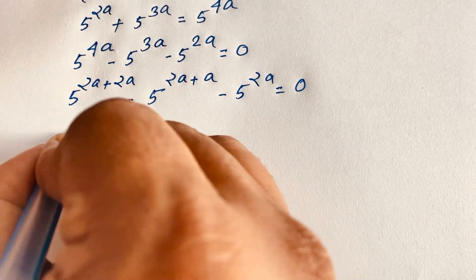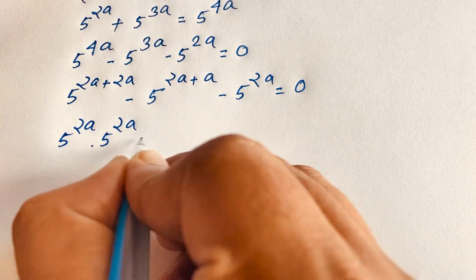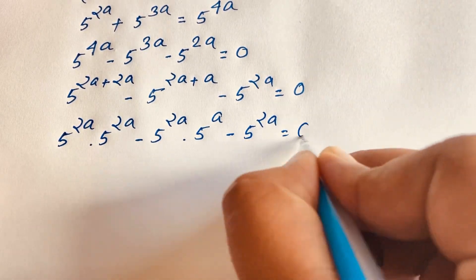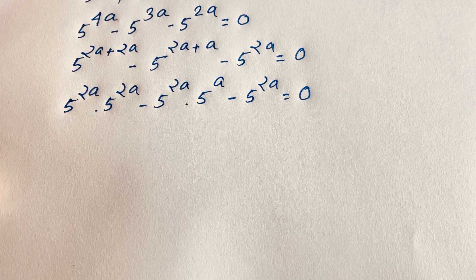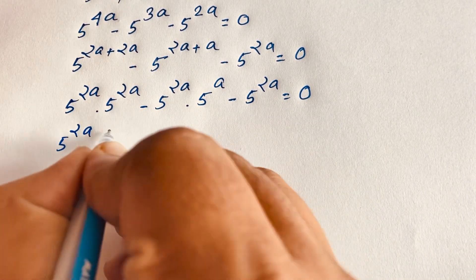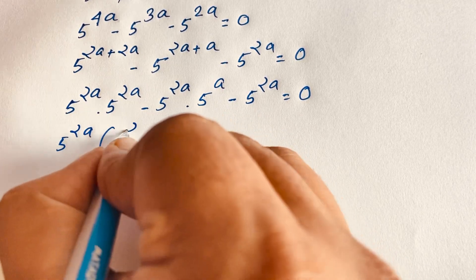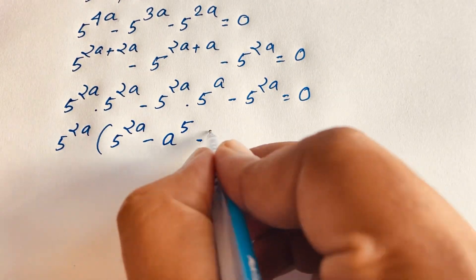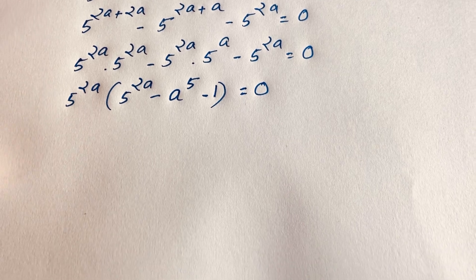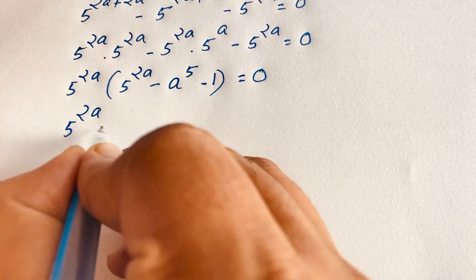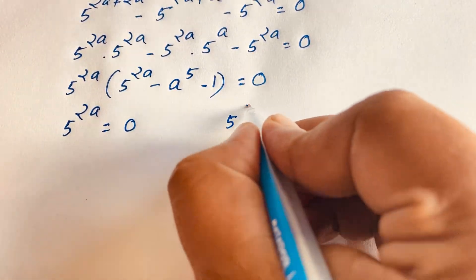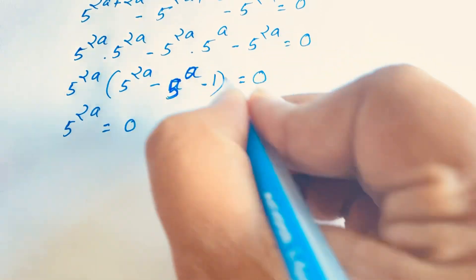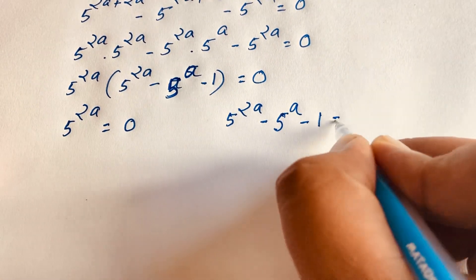I can say it will be: 5 to the power 2a times 5 to the power 2a, minus 5 to the power 2a times 5 to the power a, minus 5 to the power 2a, all equal to 0. Here, 5 to the power 2a is common, so we factor it out. Dividing through gives: 5 to the power 2a times (5 to the power 2a minus 5 to the power a minus 1) equals 0. We find two cases: first case is 5 to the power 2a equals 0; second case is 5 to the power 2a minus 5 to the power a minus 1 equals 0.